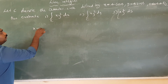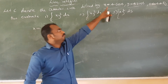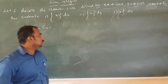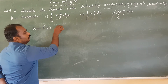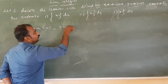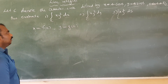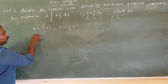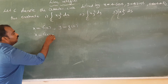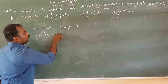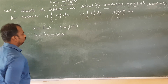x is a function of t — x is equal to F(t), and y is equal to g(t). So x equals F(t) equals 4 cos t.